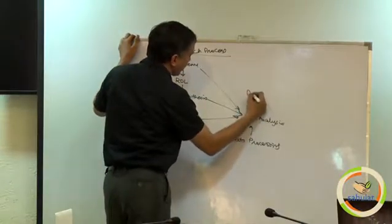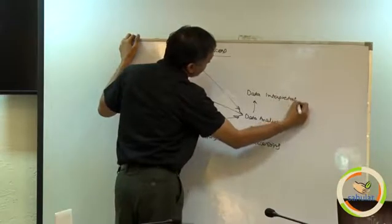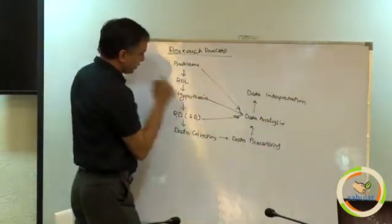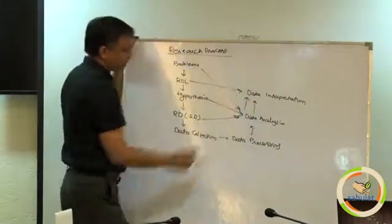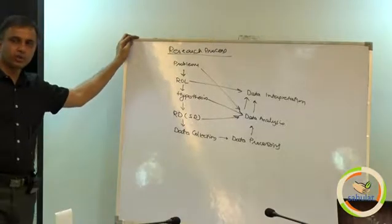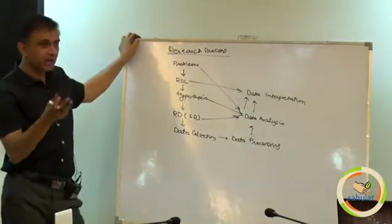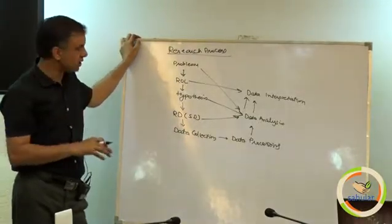After analysis next comes data interpretation. Interpretation is what is interpretation, actually is a marriage of two, it is a review of literature and plus data analysis. Data interpretation talks about the two, review of literature, so we say our results validate the results of the previous study or nullifies the results etcetera.